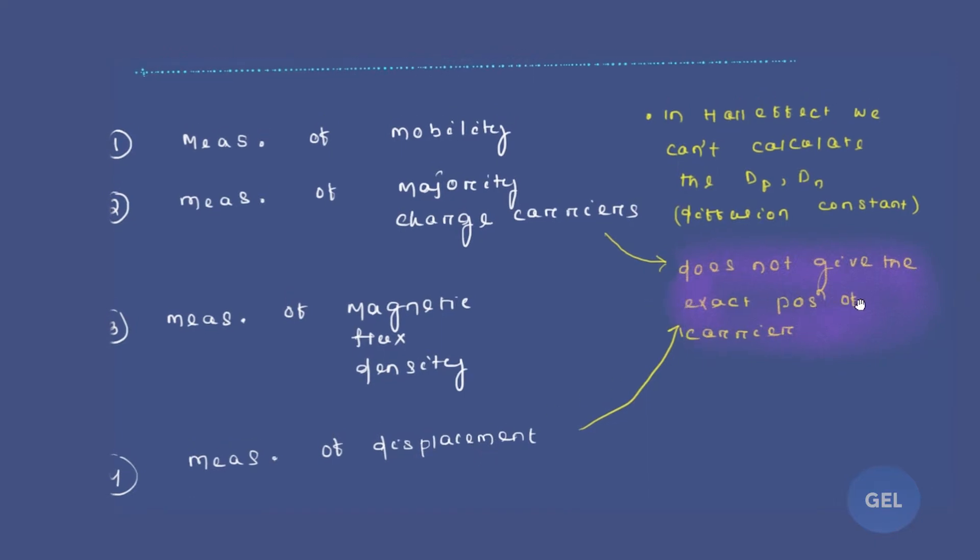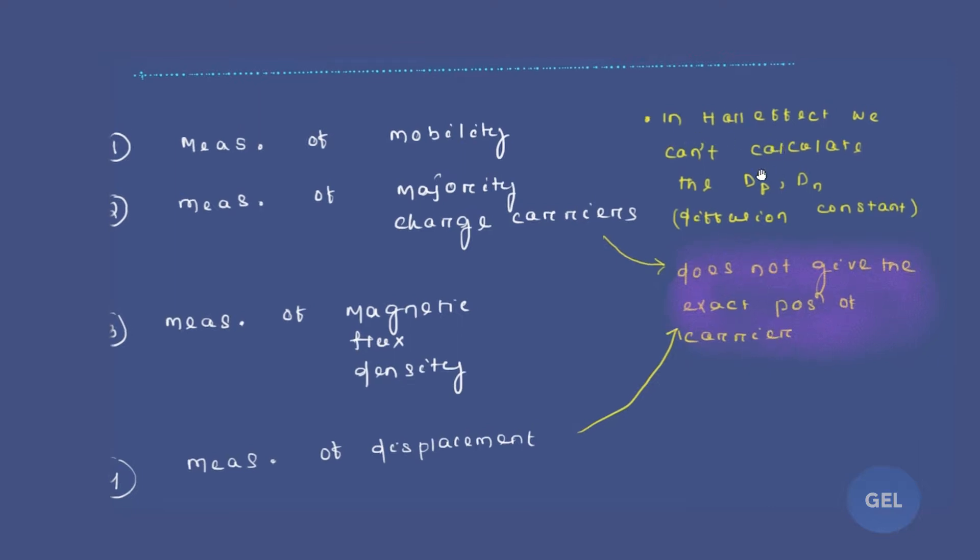But Hall effect doesn't give us the exact position of carrier. The idea of the exact position of the carrier, we don't get from Hall effect. Also in Hall effect we can't calculate the dp and dn, that is the diffusion constant. We'll get into this entire analysis of diffusions and minority carrier injection after the end of Fermi energy level.